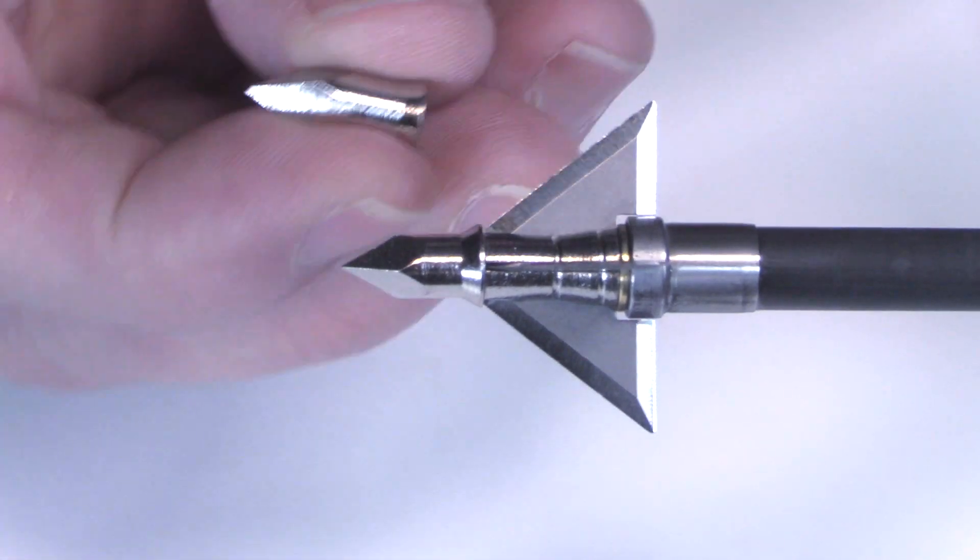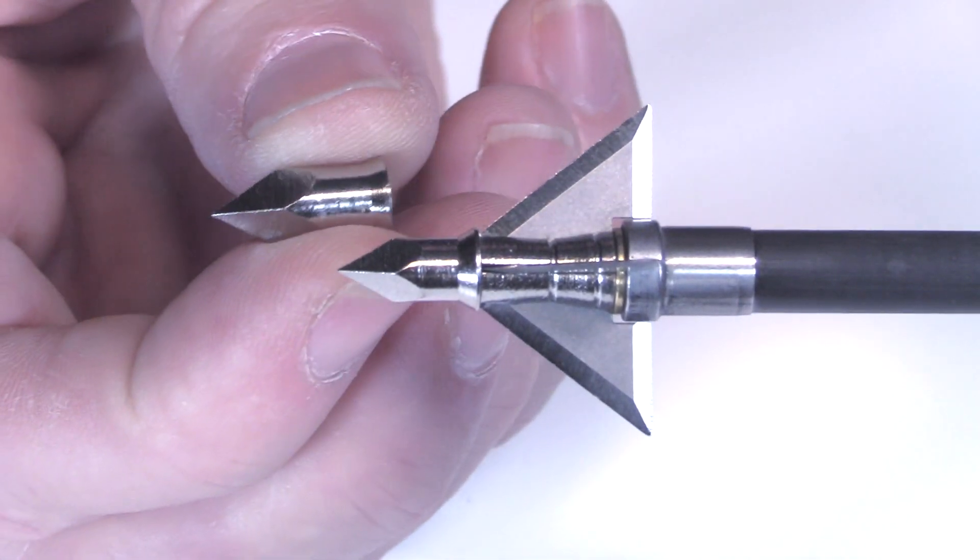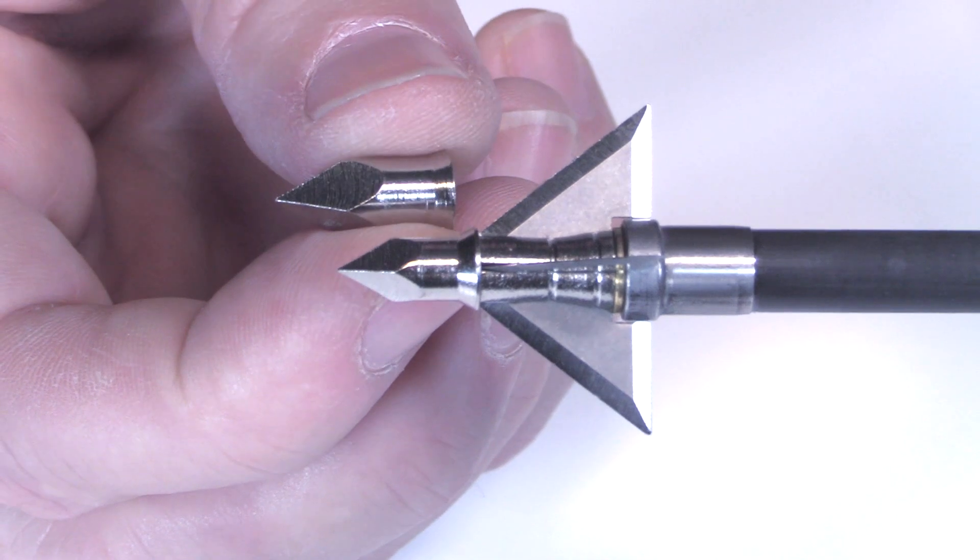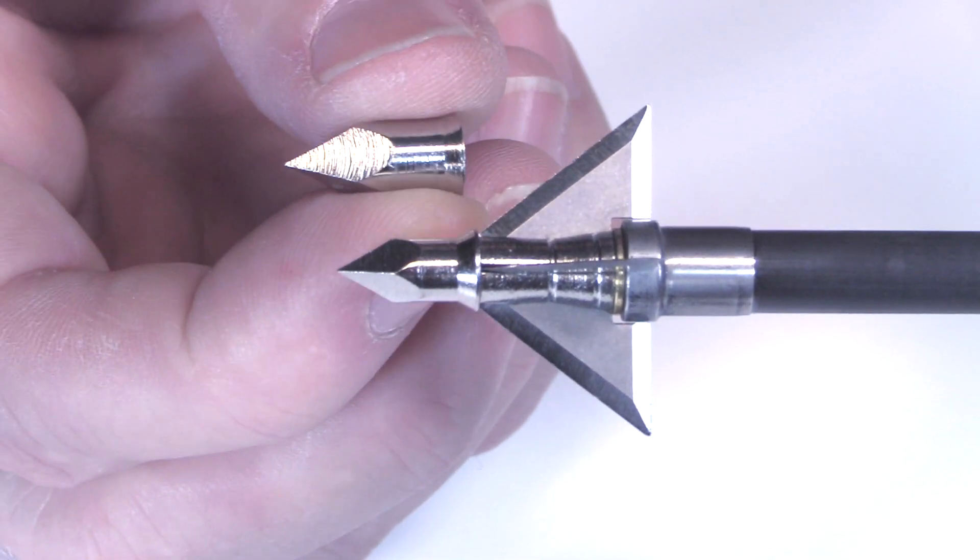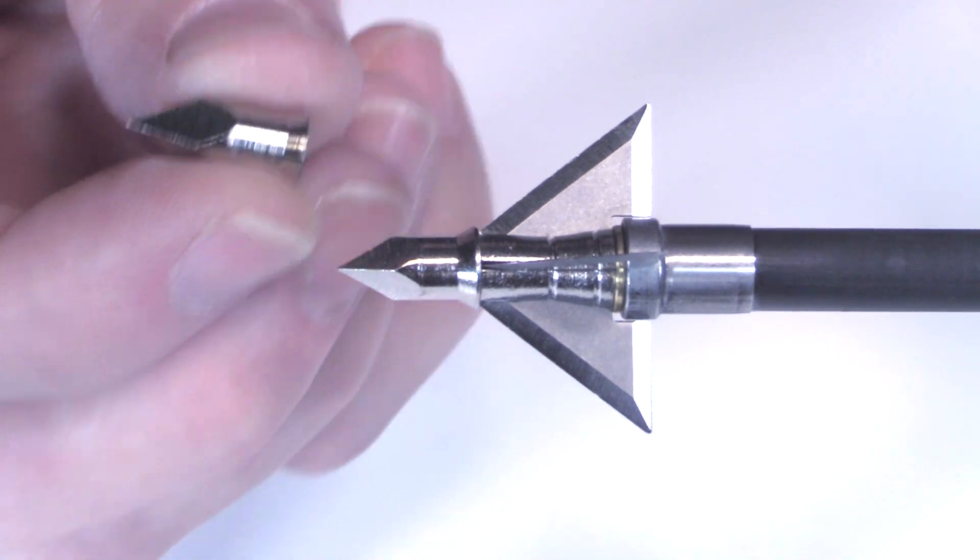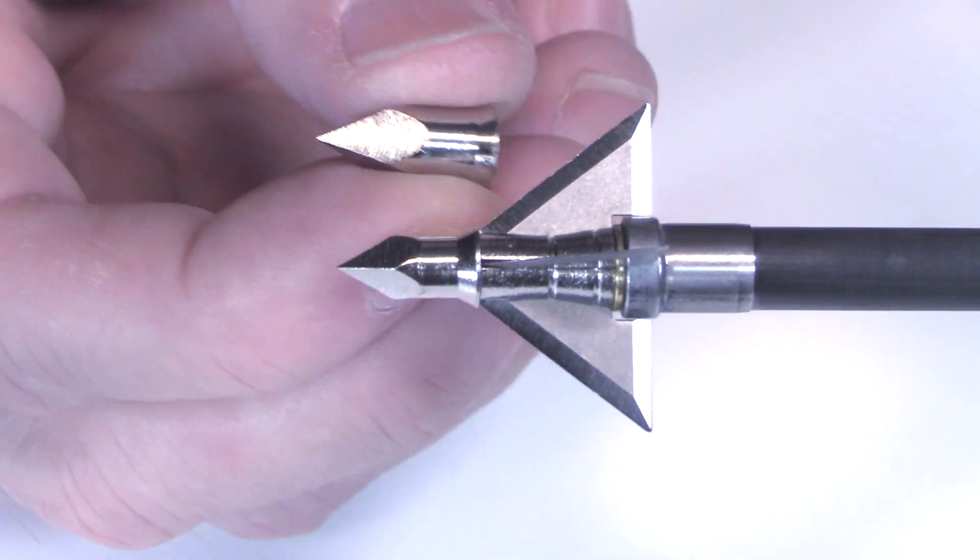Now, what I really like about these heads as well is they come with an extra set of chisel tips and these extra chisel tips transform this from a hundred grain head to 125 grain head.